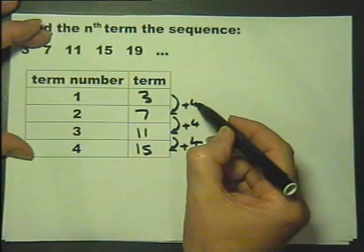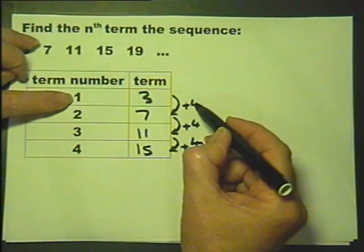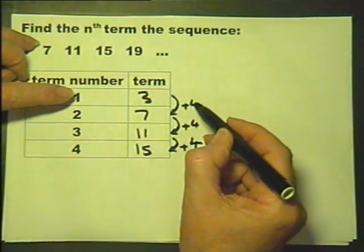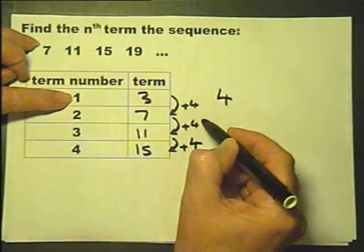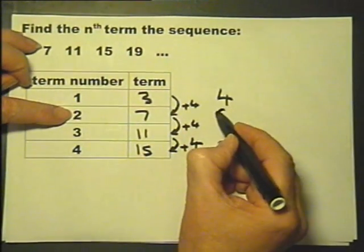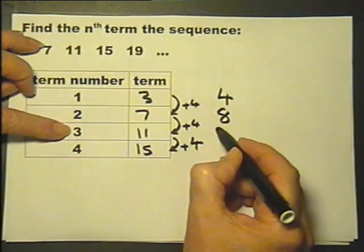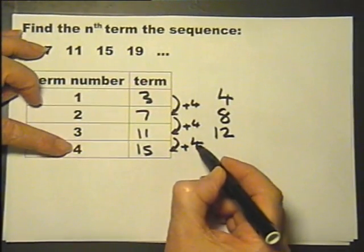Next, we multiply the difference number by the term number. In other words, 4 times 1 is 4, 4 times 2 is 8, 4 times 3 is 12, and 4 times 4 is 16.